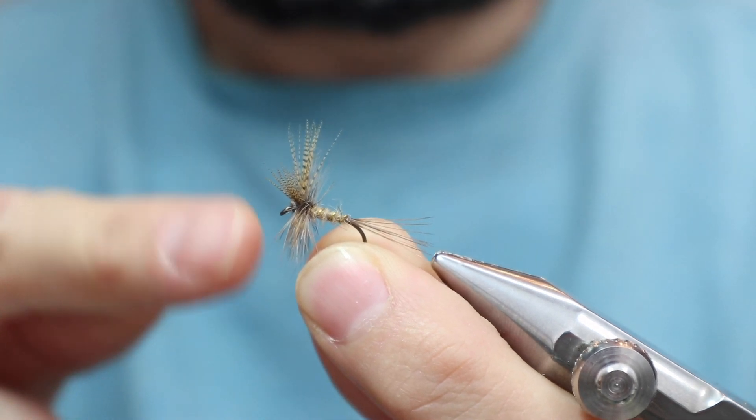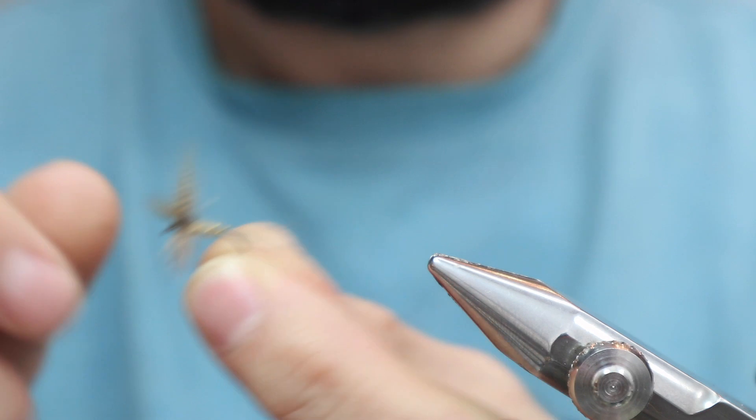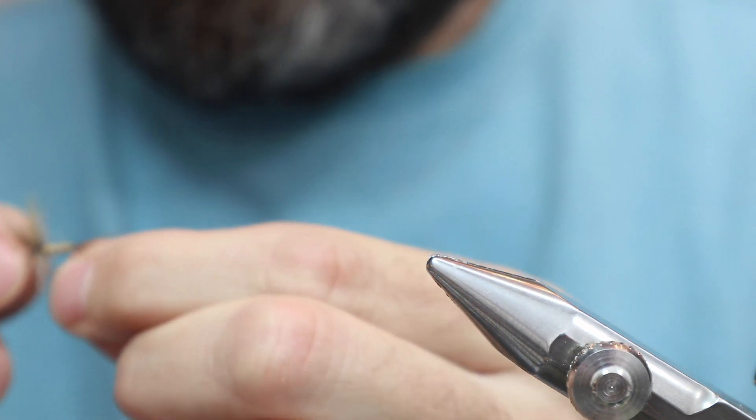He's got a lot of dry flies and nymphs profiled in it. Basically like Atherton number three nymph, Atherton number four nymph, and they're all Atherton with a number. Some people think that's crazy that he did that. I don't know, I think it might be kind of smart.